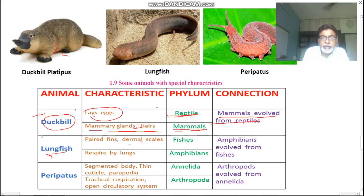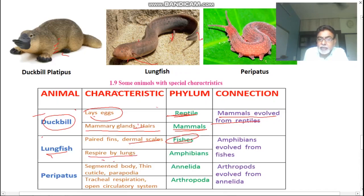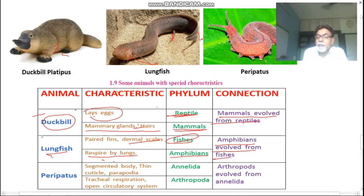First connecting link: the duck-billed platypus. It lays eggs — which is a feature of reptiles — but it also has mammary glands and hairs on the body, which are features of mammals. So this proves that mammals are evolved from reptiles. The platypus is the connecting link between reptiles and mammals. Second: the lungfish has paired fins and dermal scales — features of fishes — but it can also respire by means of lungs, which is a feature of amphibians. So amphibians are evolved from fishes.